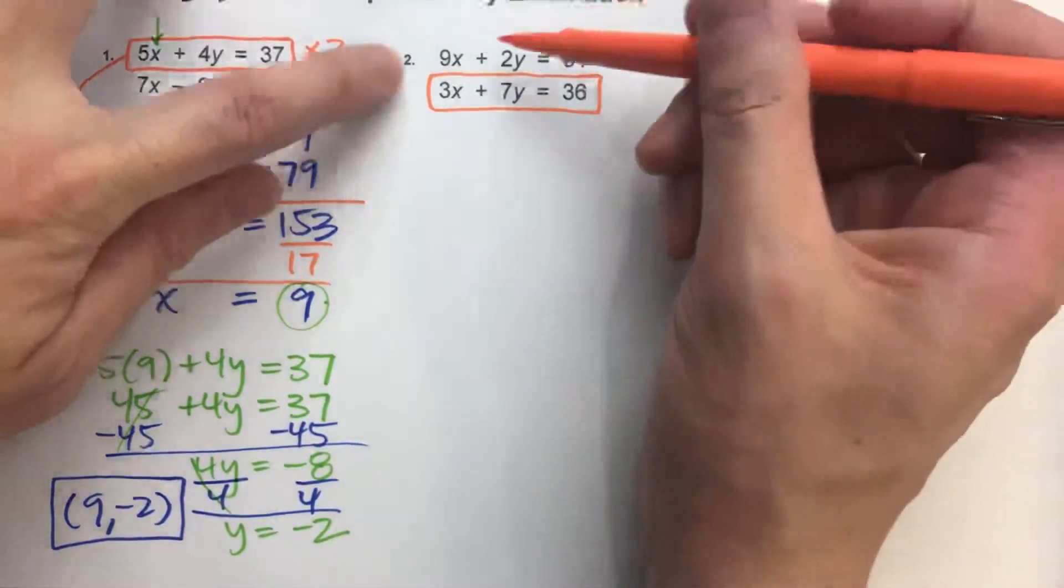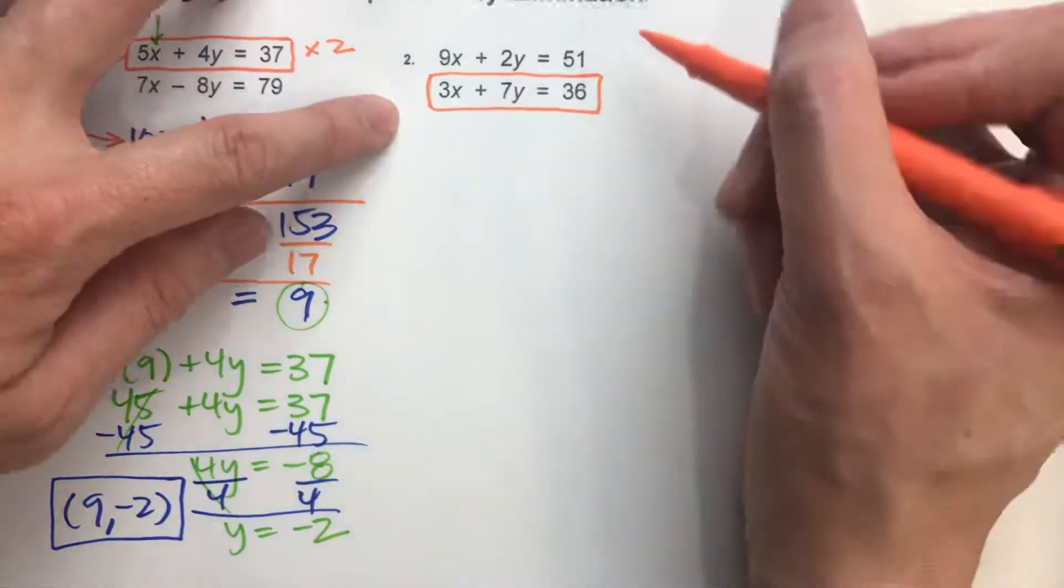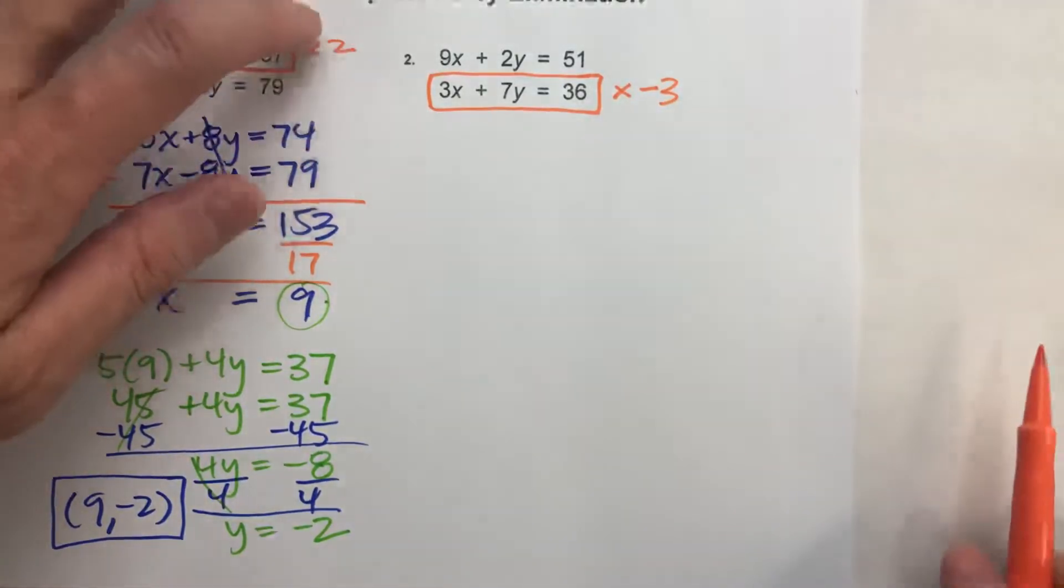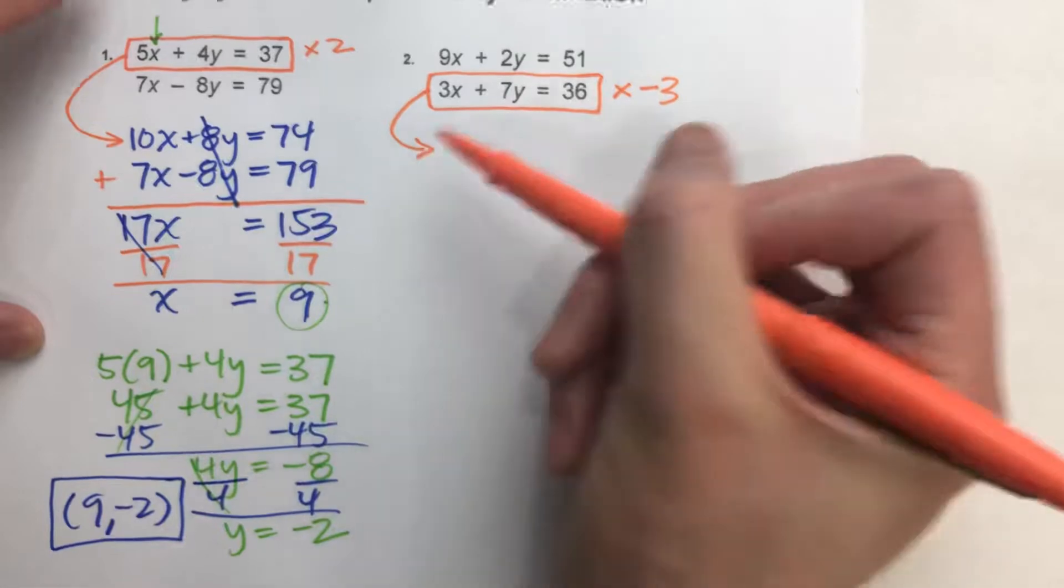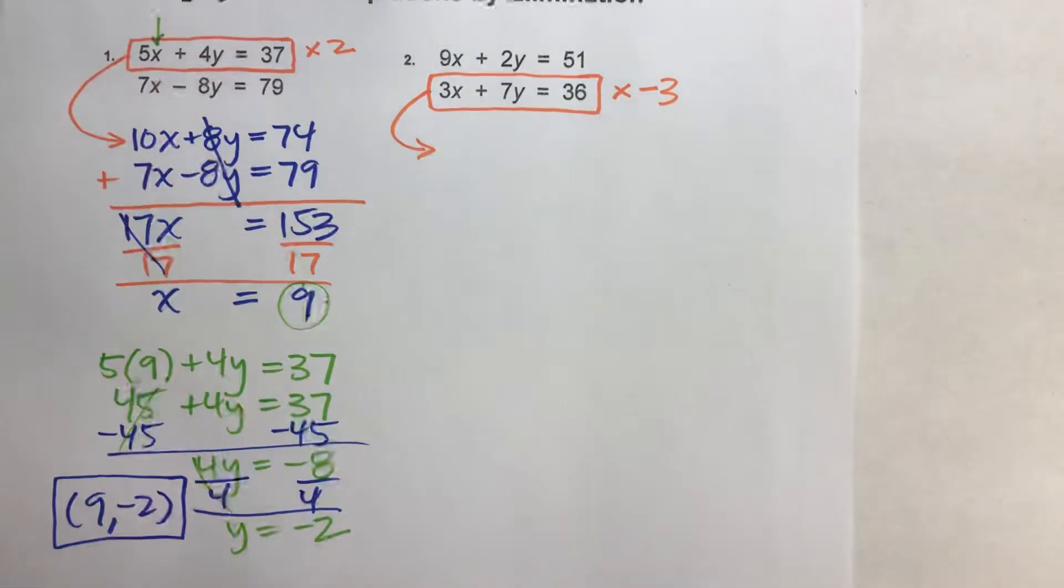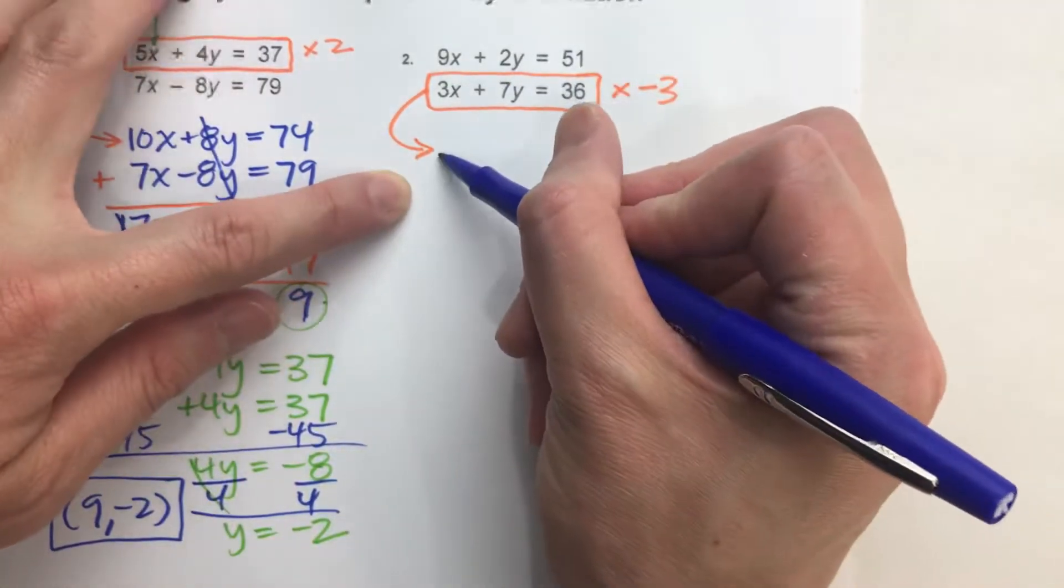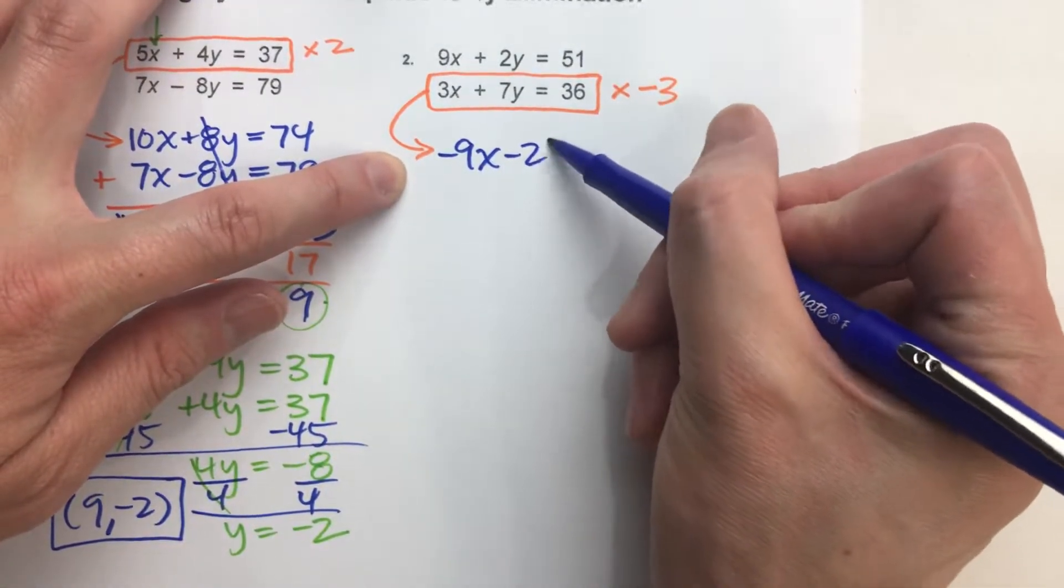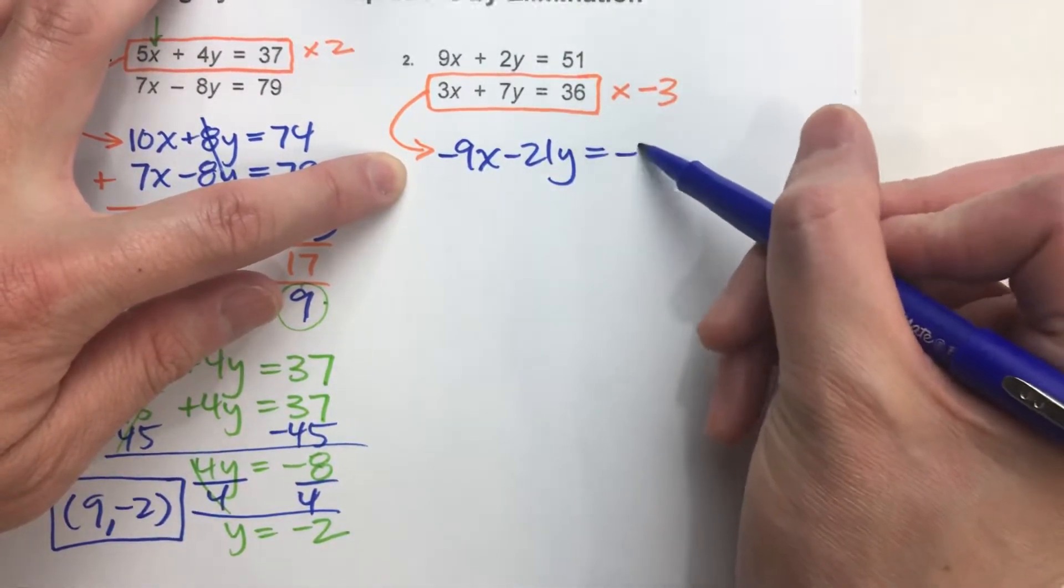Now, I've got 9x on the top. I want a negative 9x so that way they'll eliminate. So I'm going to multiply this one by negative 3. Why negative 3? Well, let's find out and see. So if I multiply this by negative 3, 3x times negative 3 is negative 9x. 7y times negative 3 is negative 21y. And 36 times negative 3 is negative 108.